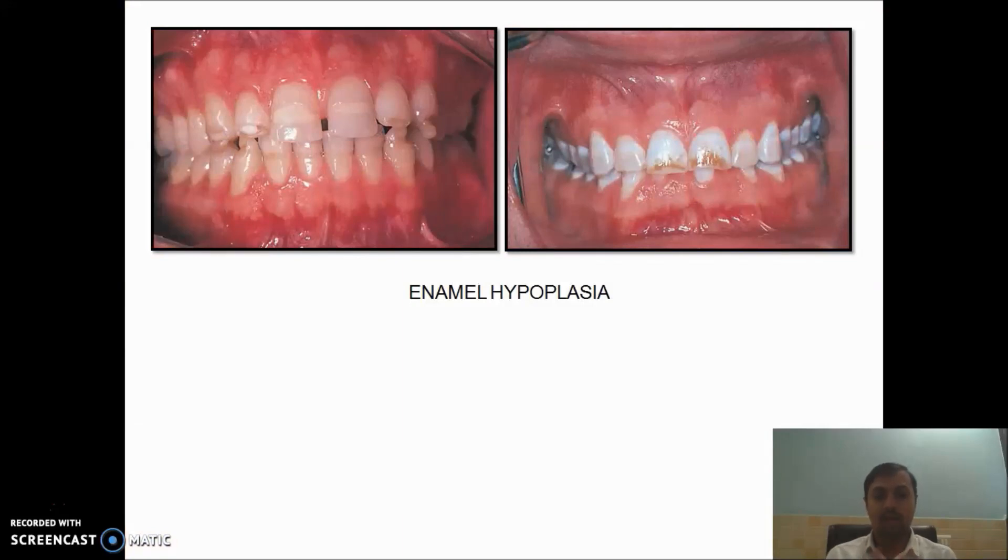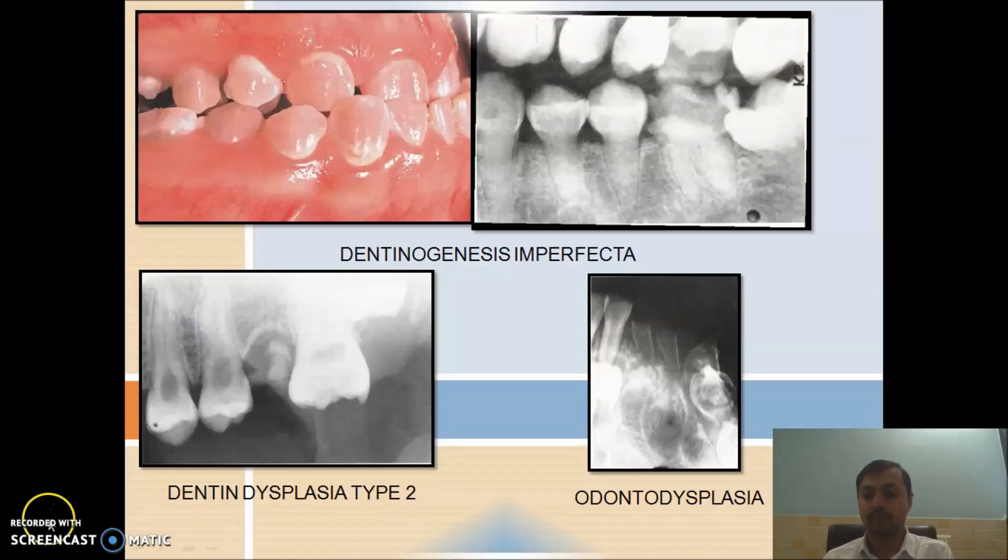Now enamel hypoplasia. You can see the opaque enamel, how the brown discoloration of the enamel has happened. Remember, nowadays we most commonly see the term MIH, that is molar incisor hypomineralization. How it is different than enamel hypoplasia? Here you can see the symmetric distribution of the lesion. But in enamel hypoplasia, there will be asymmetric distribution of the lesion on the first molar and the incisor.